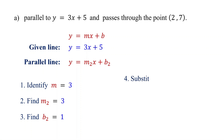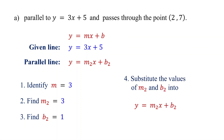Finally, substitute the values of m2 and b2 back into y equals m2x plus b2. Replace m2 with 3 and b2 with 1. This is the equation of the parallel line in slope-intercept form.